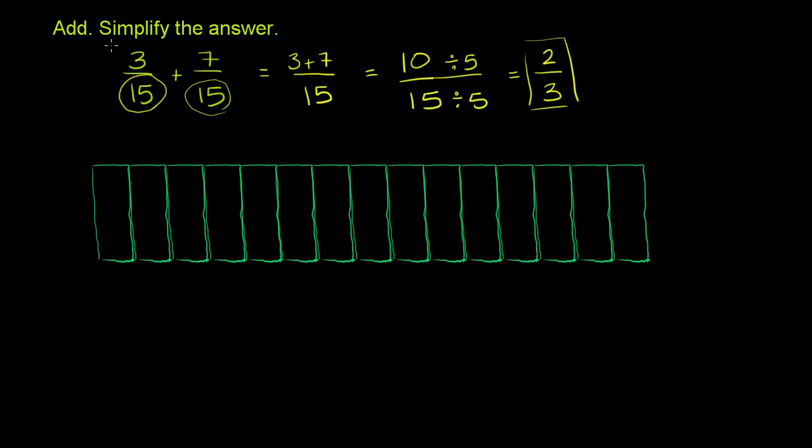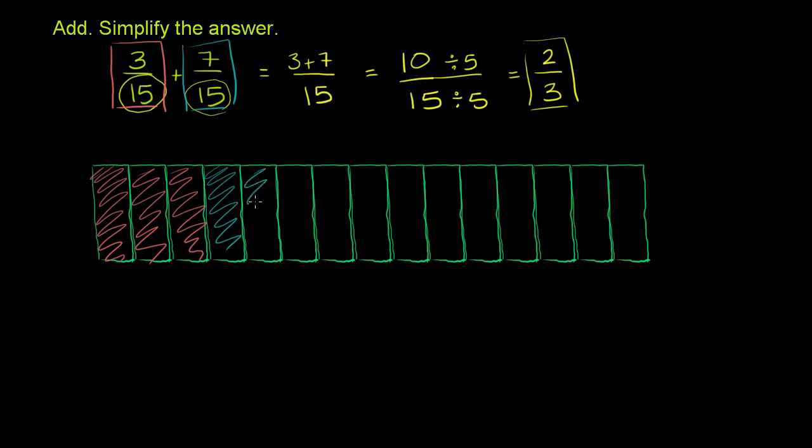Now, what is 3/15? Well, it's going to be three of the 15 sections. So 3/15 is going to be one, two, three. Now to that, we're adding seven of the 1/15 sections, or seven of the sections. So we're adding seven of those to it. So that's one, two, three, four, five, six, seven.